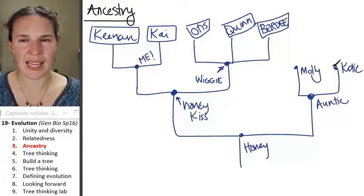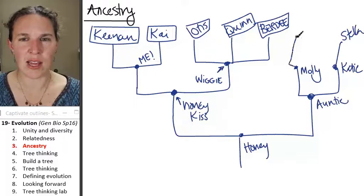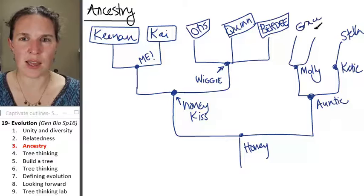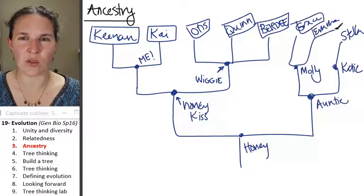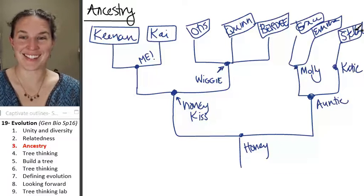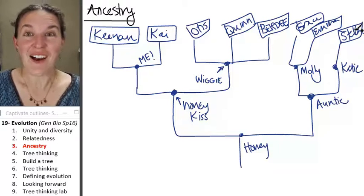And Katie actually gave rise just to Stella, and Molly gave rise to Grace and Emma. You now have all the cute humans in my family tree just from my mother's side. We just drew a tree.